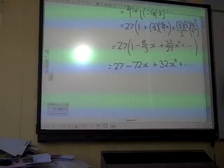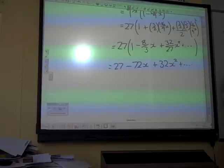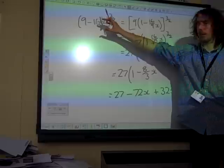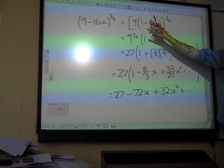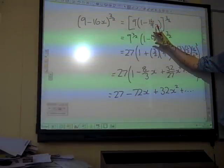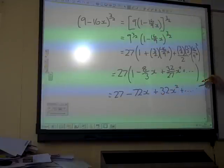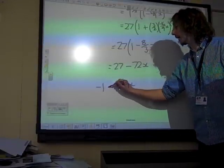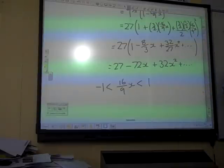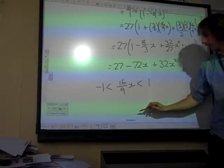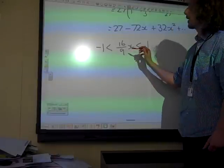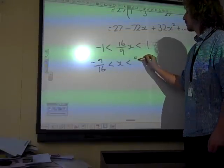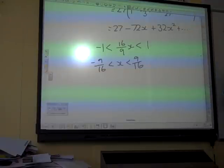Remember the question said, state the values of x for which the expansion is valid. It's valid for whatever the x term that we've done the expansion on. It's not the original x term, it's whatever we've actually done the expanding on. That bit is going to be between minus 1 and plus 1. So our 16 ninths of x is the bit that has to be between minus 1 and plus 1.